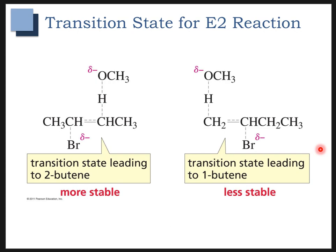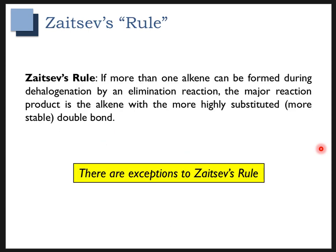This brings us to Zaitsev's rule, which tells us that if you have two possible alkene products in an elimination reaction, you're going to get the more substituted or more stable alkene. Of course, there are going to be exceptions to this rule, so think of it as a most-of-the-time situation. Let's look at a couple of exceptions.